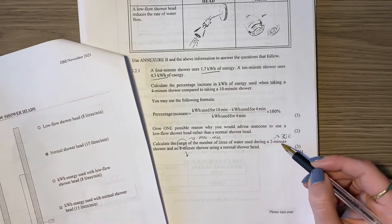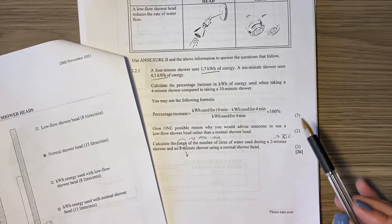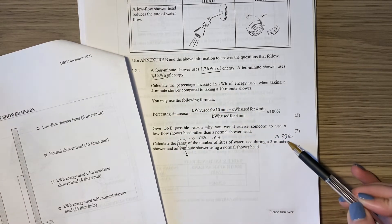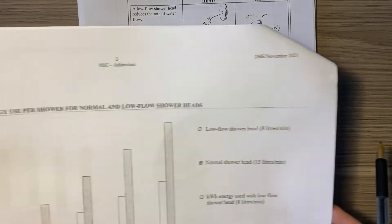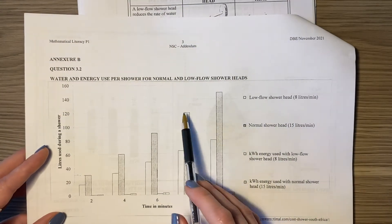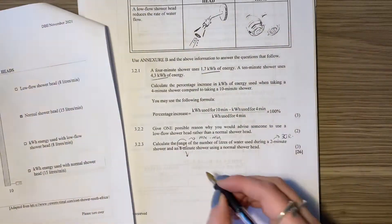That kind of makes sense, because it said that we use, if we have a normal shower head, it's 15 liters per minute, so if it's two minutes, it would be 30 liters. So it's a kind of good check there. Then for eight minutes, it looks like it's going to be 120.